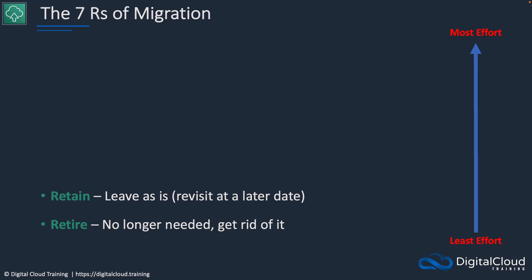Retain means you maintain that system in your on-premises data center. Maybe you purchased it fairly recently and want to depreciate it over time, or maybe it's an application that's difficult to migrate to the cloud, so for now you're just going to leave it as it is. Another R is to relocate — that means to move without modification, sometimes known as lift and shift.